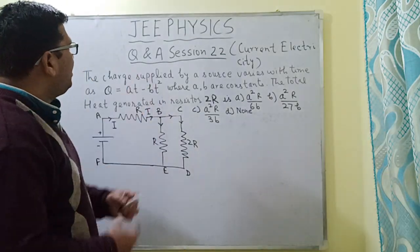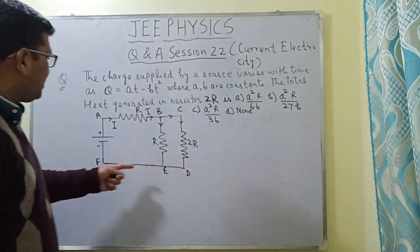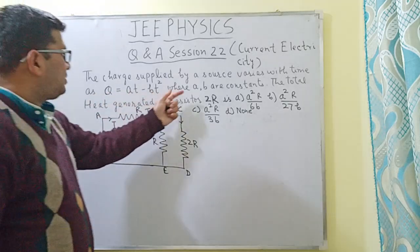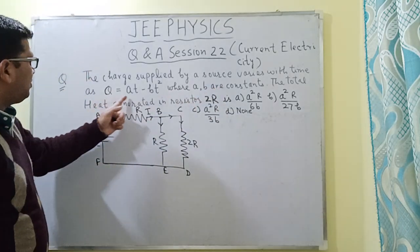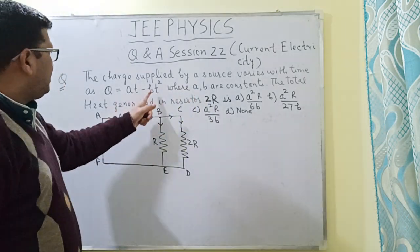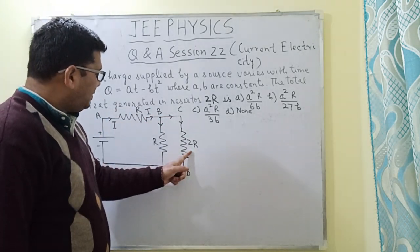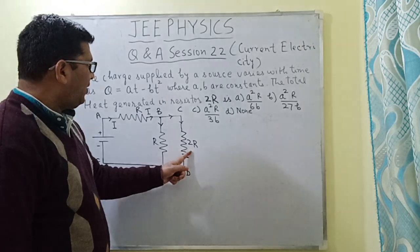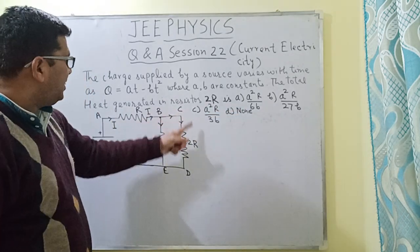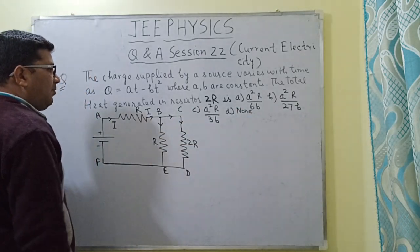Good morning everyone. This is Q&A session 22 of JEE physics and the chapter is current electricity. For this session I have taken this question written on this board. The question is: the charge supplied by a source varies with time given by Q = AT - BT², where A and B are constants and T is the time. We have to find the total heat generated in the resistor 2R, and we have been given four options.